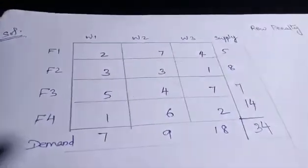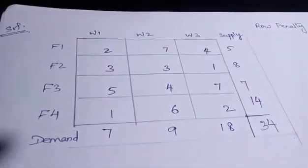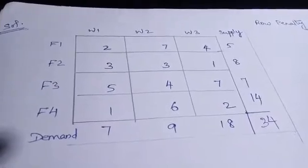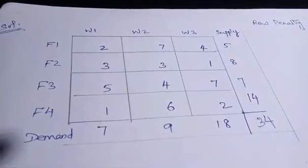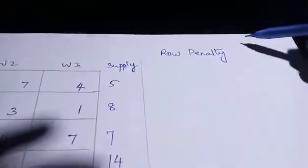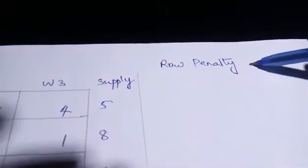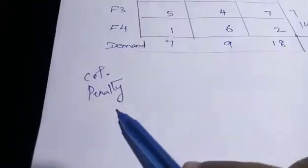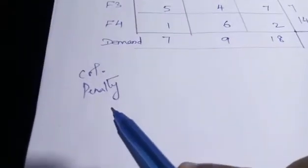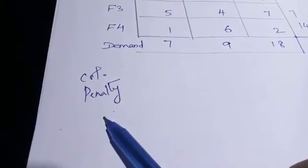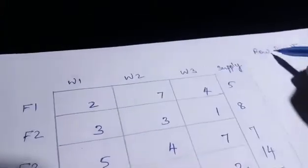In Vogel's Approximation Method, VAM, we have to check the row penalty and the column penalty. Let's see how the row penalty is calculated.